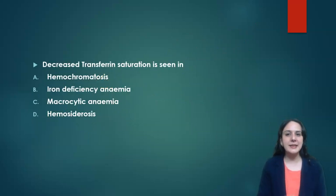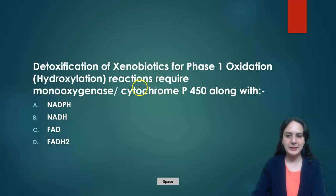Next question is: decreased transferrin saturation is seen in? Decreased transferrin saturation will be seen when iron levels decrease because iron saturates the transferrin. So it will be seen in iron deficiency anemia, whereas hemochromatosis and hemosiderosis have increased iron content, so there will be increased transferrin saturation, and it will not be affected in macrocytic anemia.